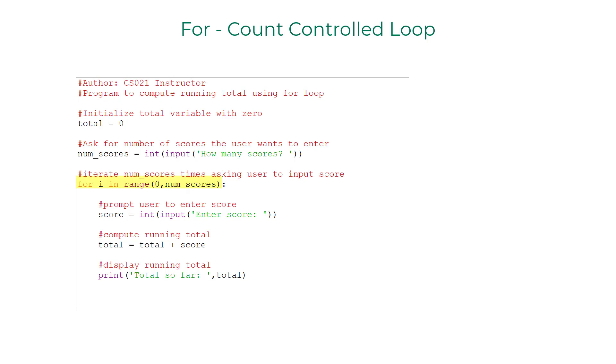This will make sure that the for loop iterates num_scores times. After the program enters the for loop we ask for the score, add the score to the running total, and then display the running total.